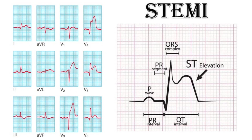In leads V2 and V3, the ST elevation is more than two small boxes, and in all other leads it is more than one small box, so these will be considered significant. This constitutes anterolateral wall myocardial infarction.